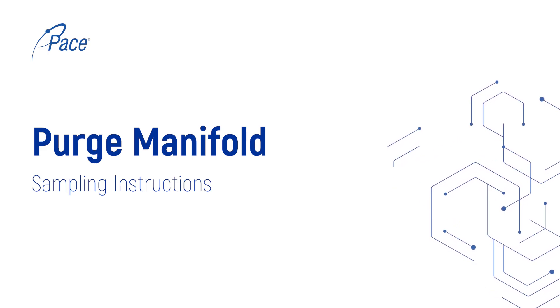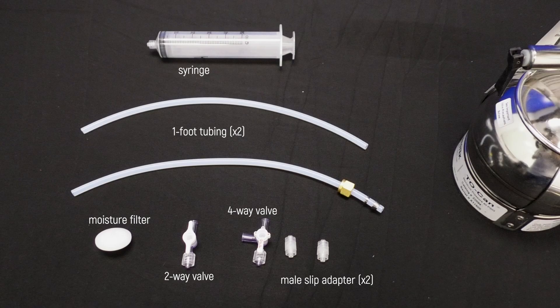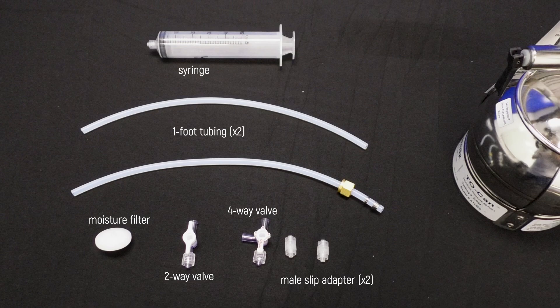When you receive your purge manifold kit, you will have two one-foot sections of tubing, two male slip adapters, a moisture filter, a two-way valve, a four-way valve, and your syringe to draw vacuum on your system.